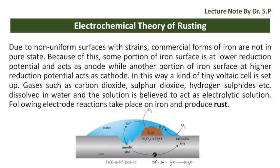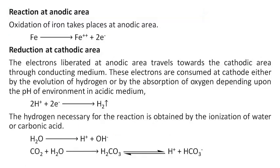Following electrode reactions take place on iron and produce rust. Oxidation of iron takes place at the anodic area and reduction takes place at the cathodic area. The electrons liberated at the anodic area travel towards the cathodic area through the conducting medium.